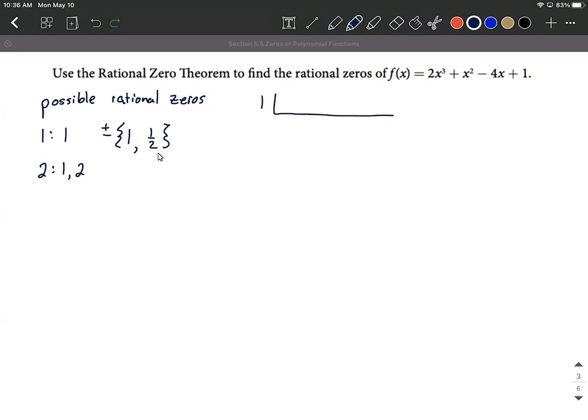So for synthetic division, I'm going to put 1 up above, 1 on the outside here, and then I'm going to take each one of these coefficients. Now it doesn't look like we skipped over any powers of x, so I don't need a placeholder. If you did skip over, say, x to the second power, you'd want to put a 0x² in its place. All right, so 2, 1's out in front here, negative 4 and positive 1.